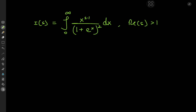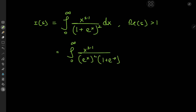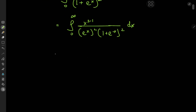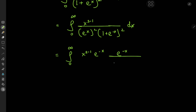So how exactly do we start off the solution development? A nice place to begin is to factor out an e to the x term from the denominator. That gives me the integral from 0 to infinity of x to the s minus 1 divided by e to the x squared times 1 plus e to the negative x squared. I can write this as the integral from 0 to infinity of x to the s minus 1 times e to the negative x times e to the negative x divided by 1 plus e to the negative x squared.